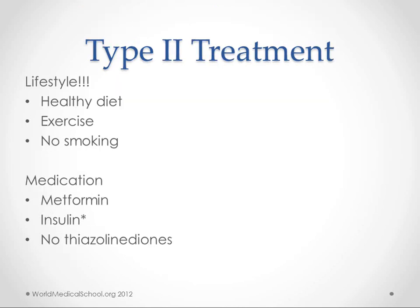The treatment of type 2 for kids is all about lifestyle. We can use medications, but this is a preventable disease. These kids need to change their lifestyle, and more importantly, the parents need to change what they're doing so the kids can get better. You can totally get better from type 2 diabetes in kids — it's on the parents and the patient to change their lifestyle. If we can't control it, then we can use metformin or insulin, but thiazolidinediones are not indicated, and I don't think sulfonylureas are either.